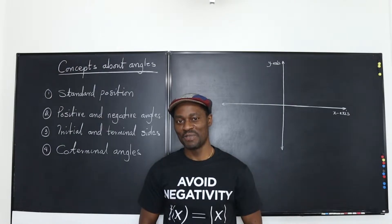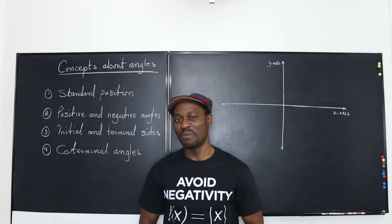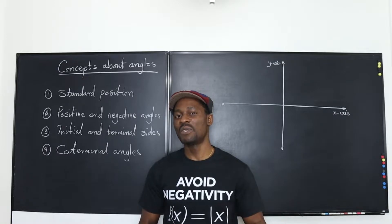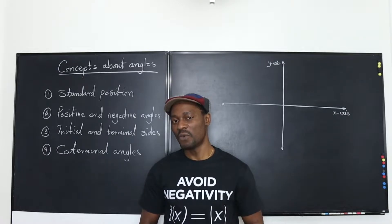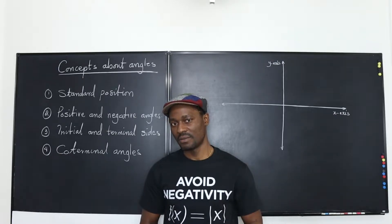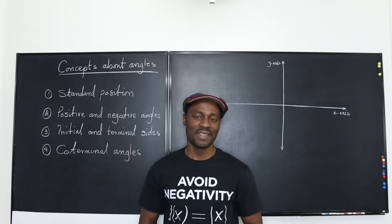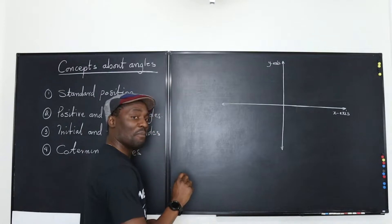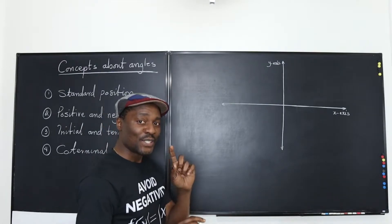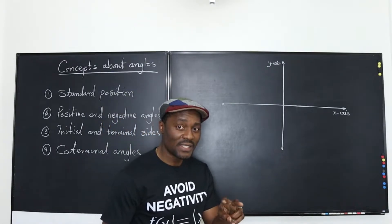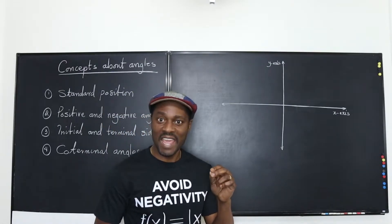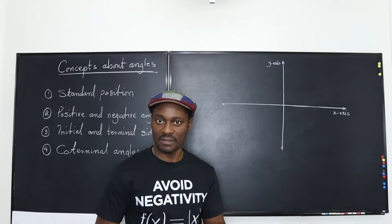Welcome to another video. Let's start with the most basic question: How is an angle formed? An angle is formed by two sides at a vertex.